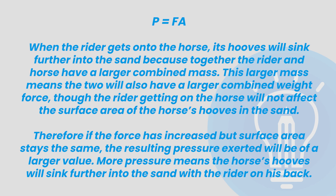As you may have guessed, there's your excellence. You need that nice linking statement at the end, perfectly putting everything in context and answering your question all at once. Altogether this looks like: 'Pressure equals force over area. When the rider gets onto the horse, its hooves will sink further into the sand because together the rider and the horse have a larger combined mass. This larger mass means the two will have a larger combined weight force, though the rider getting on the horse will not affect the surface area of the horse's hooves in the sand. Therefore, if the force has increased but the surface area stays the same, the resulting pressure exerted will be of a larger value. More pressure means the horse's hooves will sink further into the sand with the rider on its back.'